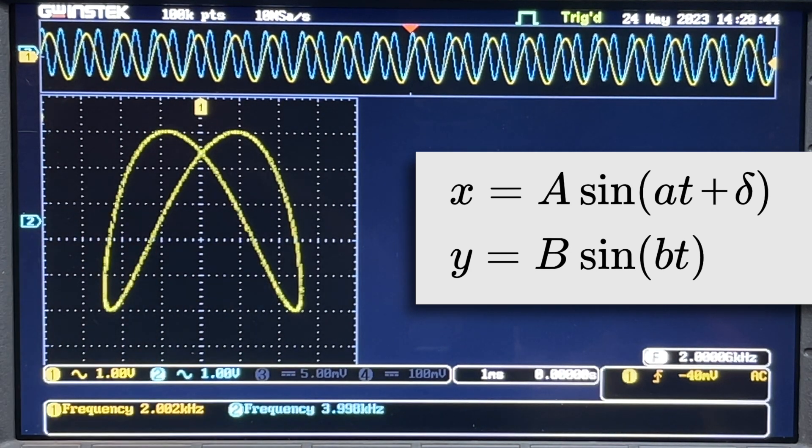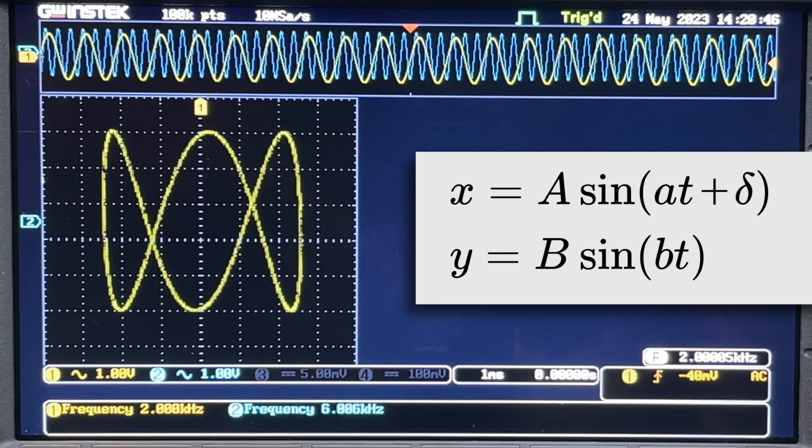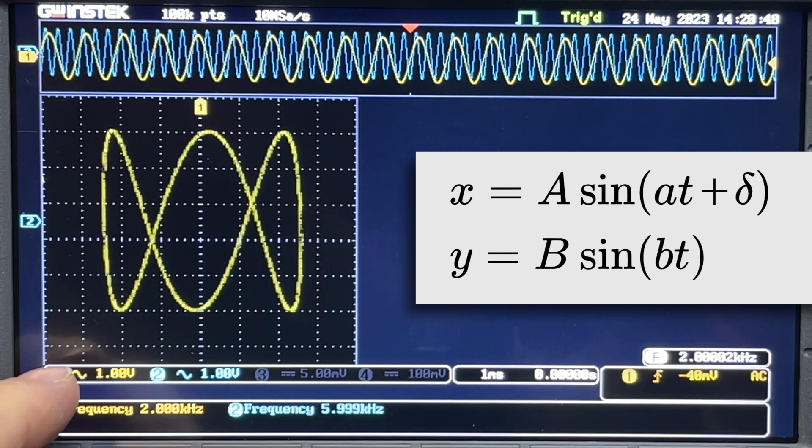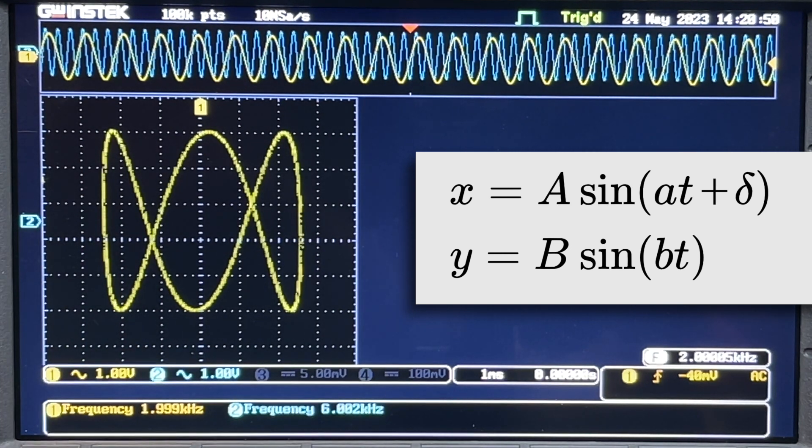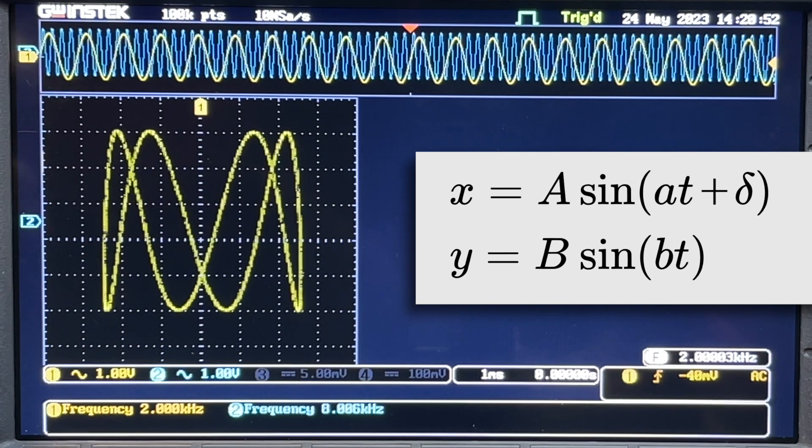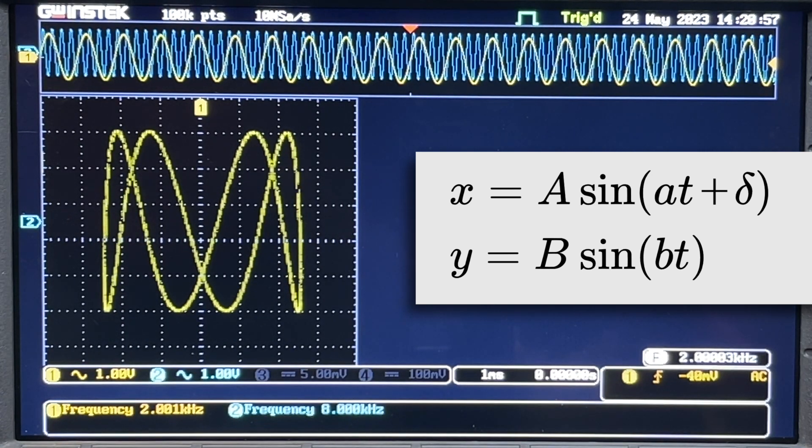And if we double the y frequency we'll get this figure. And with a frequency ratio of 1 to 3 we'll get a Lissajous figure like this. Let's make it 1 to 4 by cranking up the frequency to 8. So the ratio is 1 to 4. It looks like this.